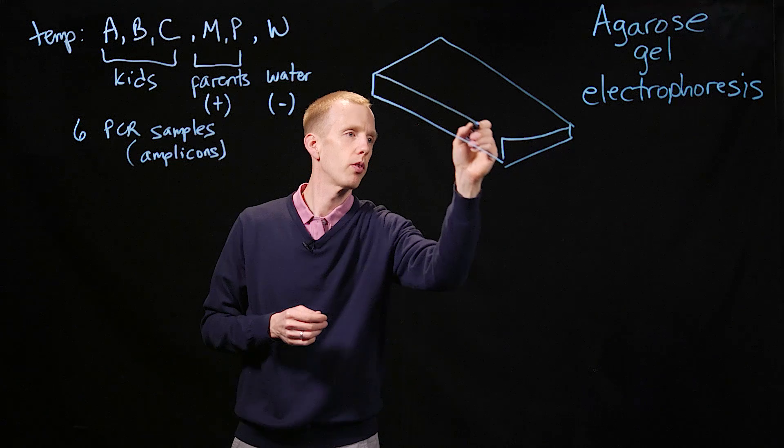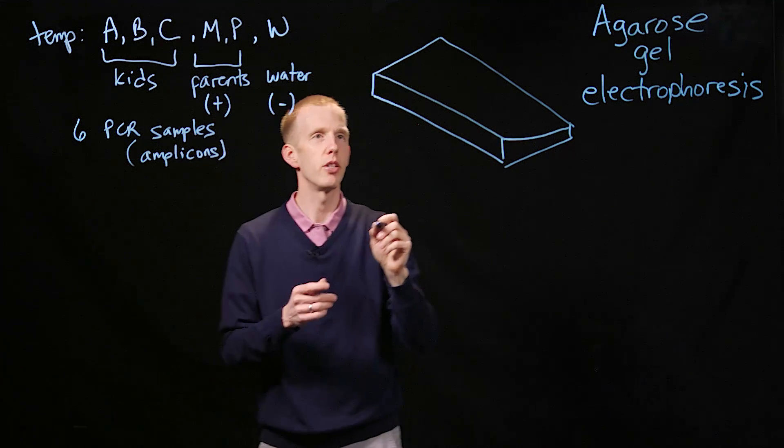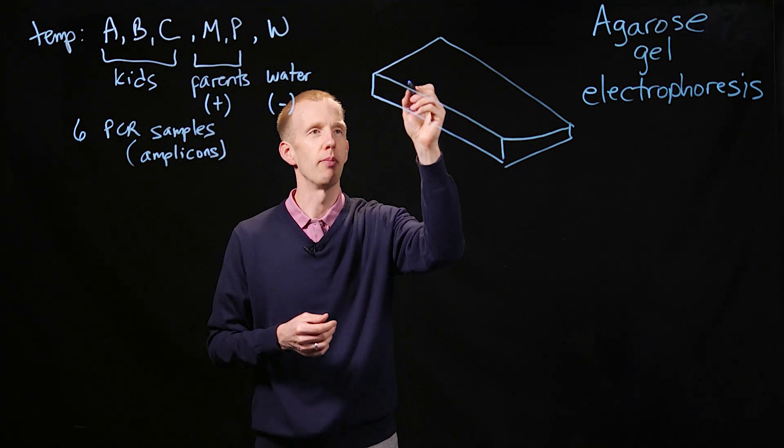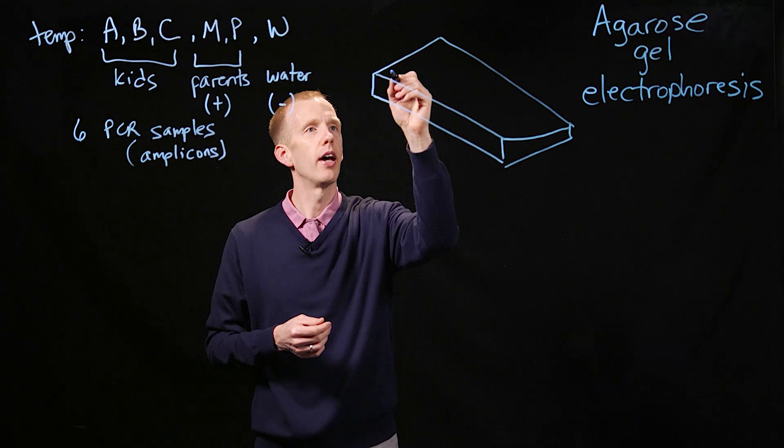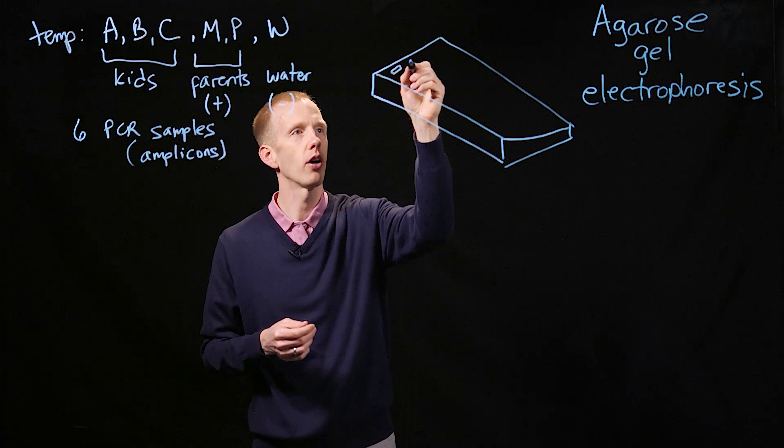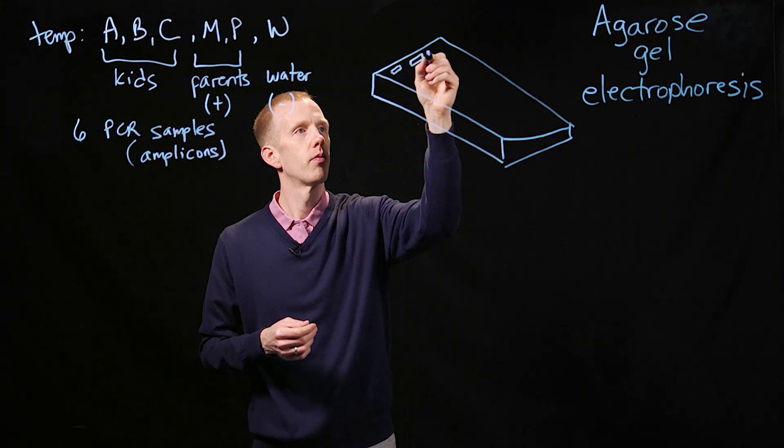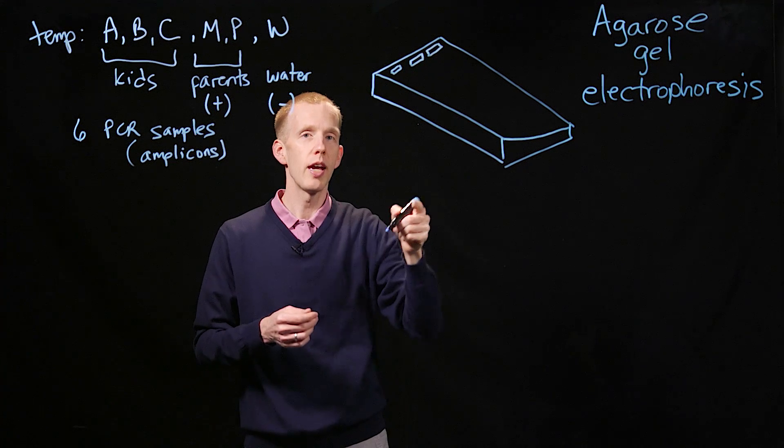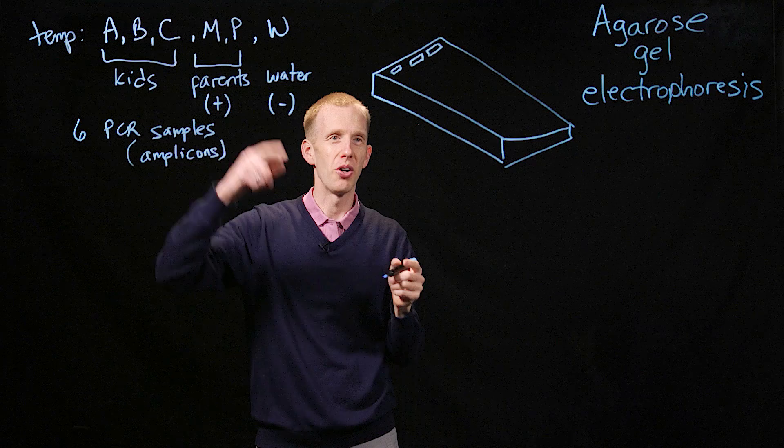So a big rectangular piece of jello. It's actually melted agar. And at one end, there are depressions, little holes that go down into the agar, where samples can be added, like, for example, our DNA samples.